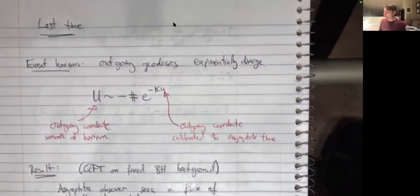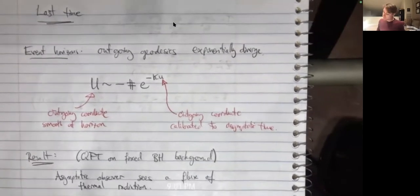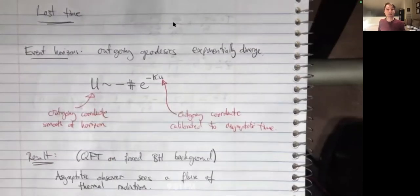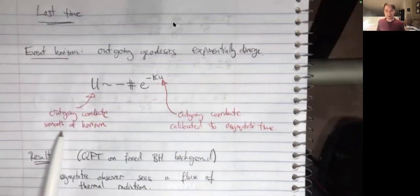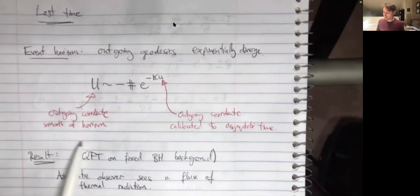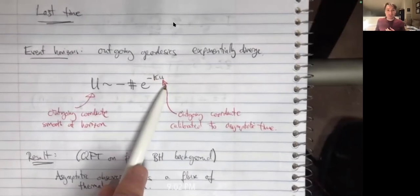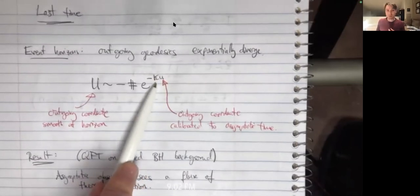A brief recap of the main points from yesterday's talk, which was mostly about the geometry of quantum field theory in a static background. The first key point was that near event horizons we had this phenomenon that outgoing geodesics diverge exponentially. One way to express that is in terms of the relationship between an outgoing coordinate labeling outgoing null geodesics near the horizon — this capital U coordinate, a Kruskal-type coordinate that's smooth at the horizon.